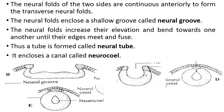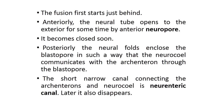The edges fuse to form the neural tube. The canal which was the neural groove becomes a canal within the neural tube. Once the two edges meet together, the cells on either side cover up the neural tube, which then sinks deep into the interior. Fusion first starts just behind the anterior portion — it is the posterior portion where fusion of the neural folds begins.